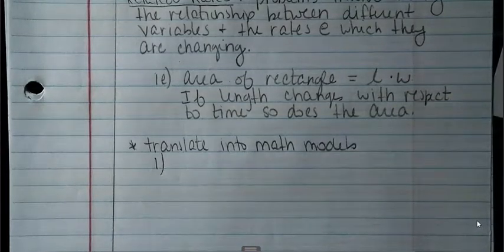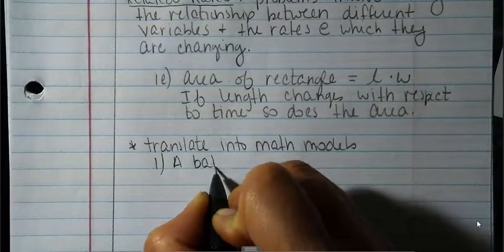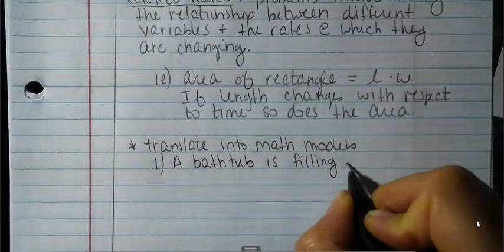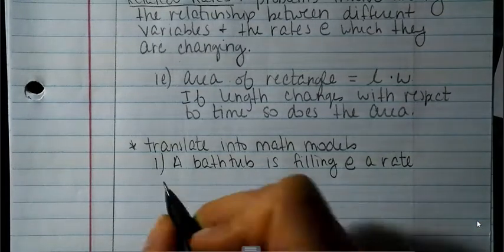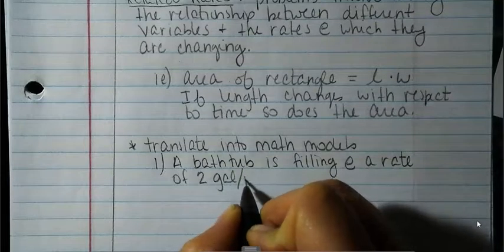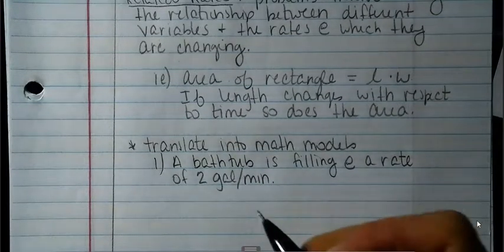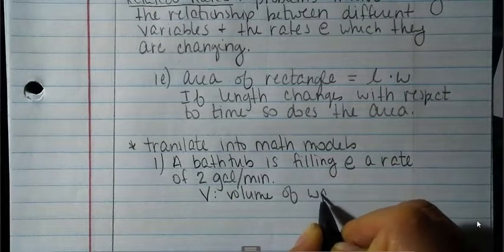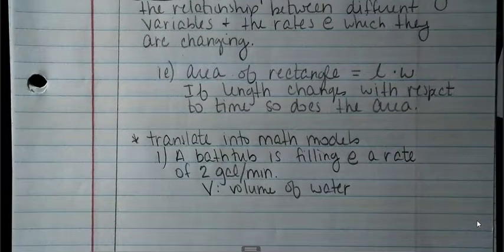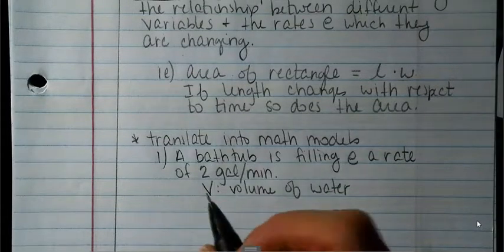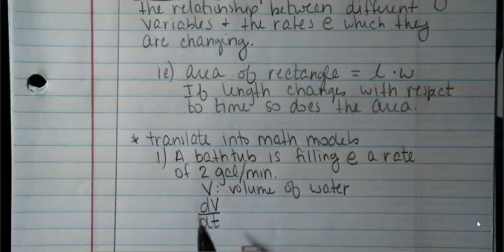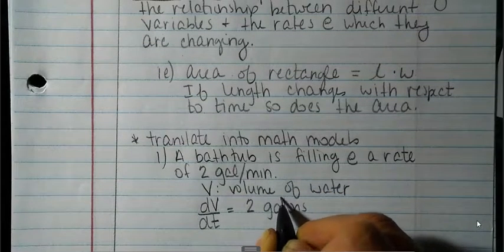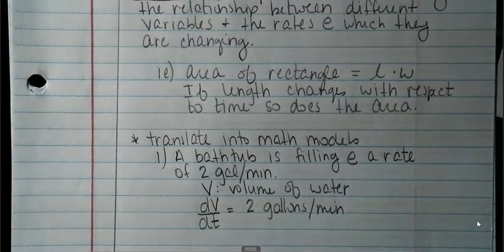The first one: a bathtub is filling at a rate of 2 gallons per minute. If we let V be the volume of water, then the rate at which the volume is changing — dV with respect to time — will be 2 gallons per minute.